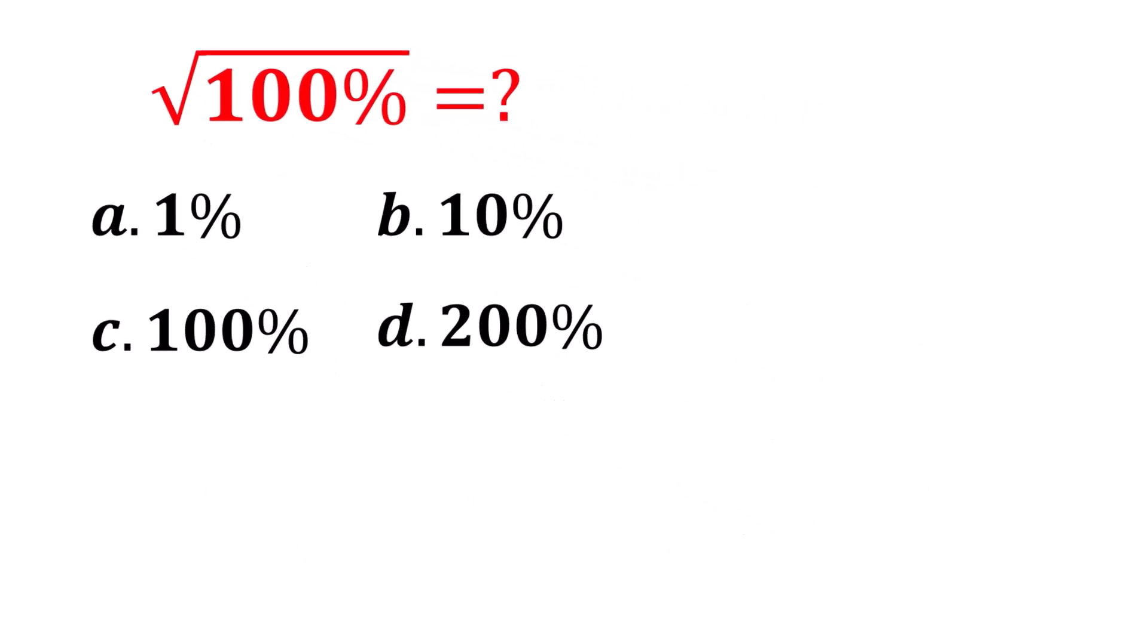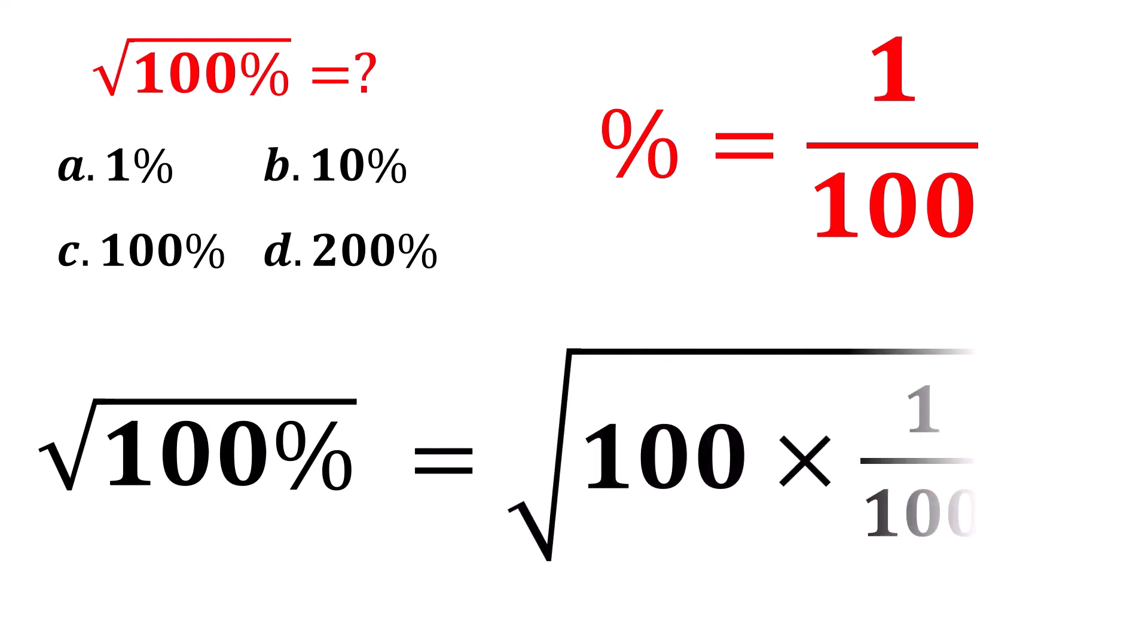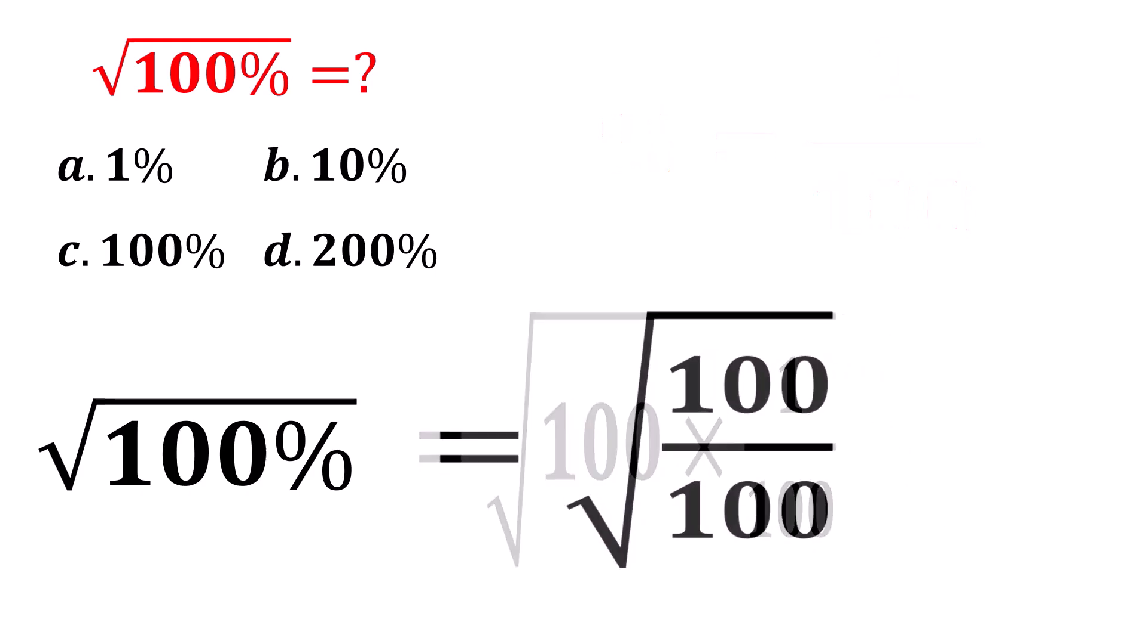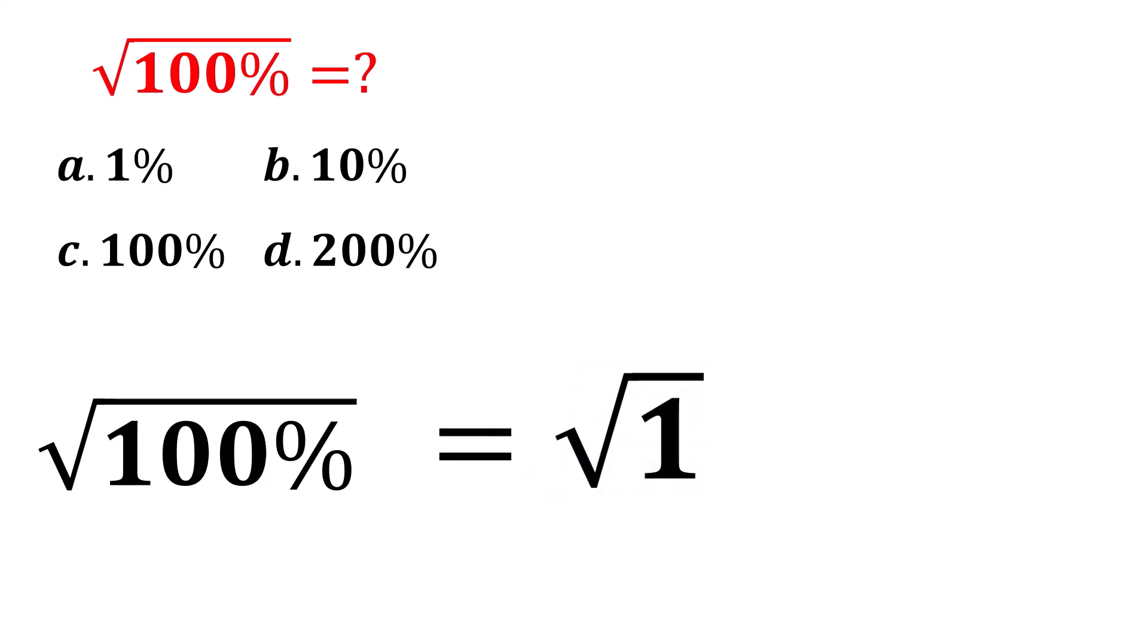Let's go back to the solution. We have the square root of 100%. Since percent means 1 over 100, we can write this as the square root of 100 multiplied by 1 over 100. This can be written as the square root of 100 over 100. That becomes the square root of 1, and finally, it gives 1.